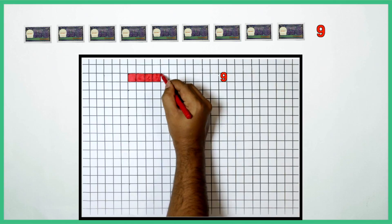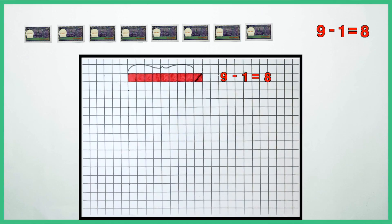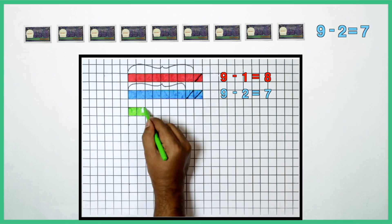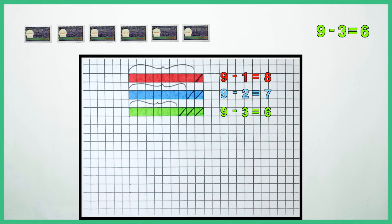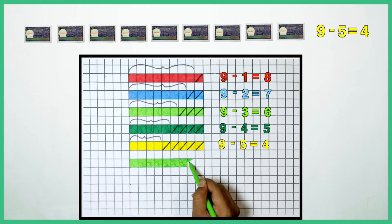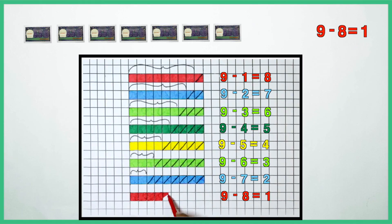Students can also use play money to understand subtraction. 9 rupees minus 1 gives us 8. And 9 minus 2 gives us 7. 9 minus 3 gives us 6 and so on. We see how subtraction reduces the original number 9.